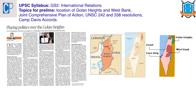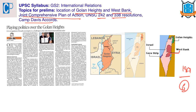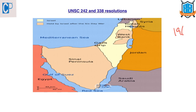The next article is 'Playing Politics Over Golan Heights,' under GS Paper 2, international relations. Recently, the United States recognized Israel's sovereignty over the Golan Heights. From the prelims point of view, we should know the location of the Golan Heights and West Bank, the Joint Comprehensive Plan of Action (JCPOA), UNSC Resolutions 242 and 338, and the Camp David Accords. The Golan Heights was part of Syria until 1967, when Israel captured it in the Six-Day War. Syria failed in all its attempts to regain it, and recently the US declared Golan Heights as sovereign Israeli territory.